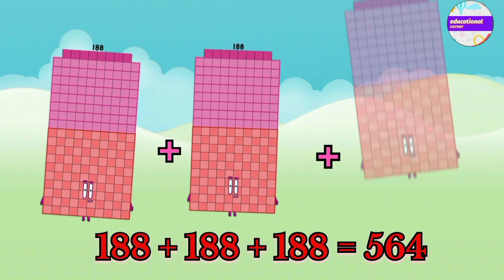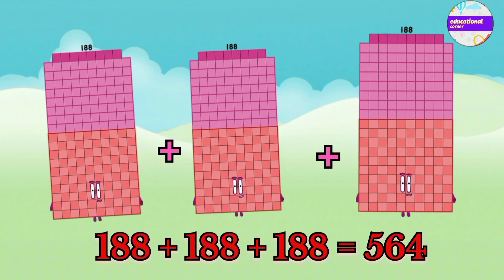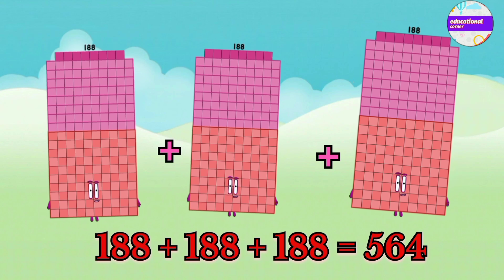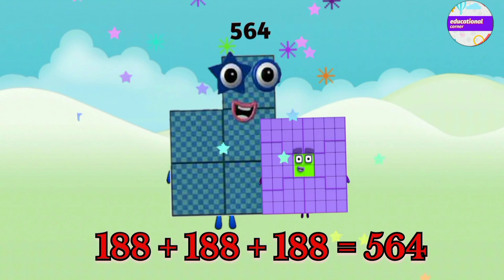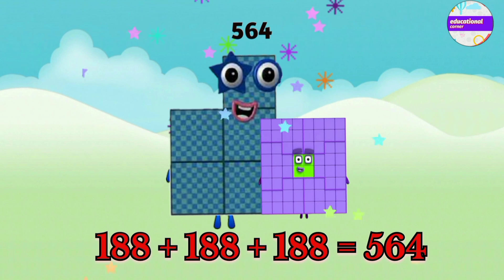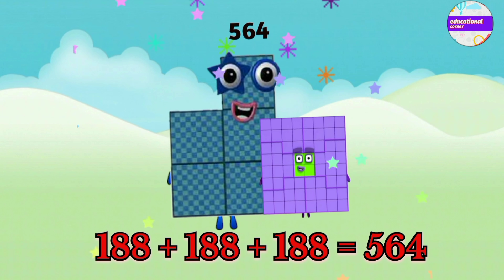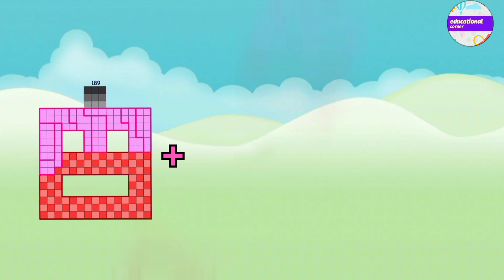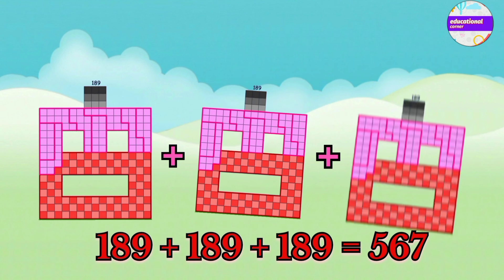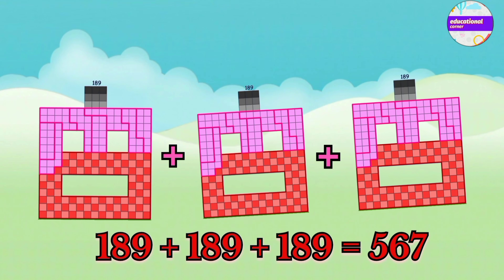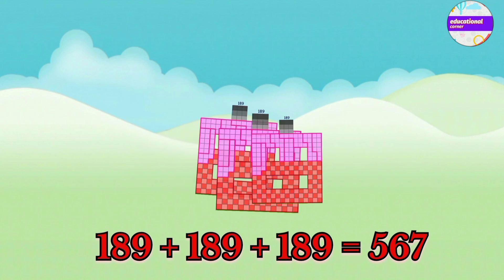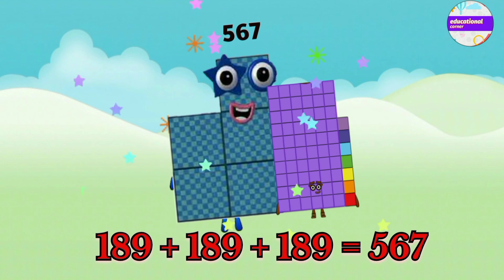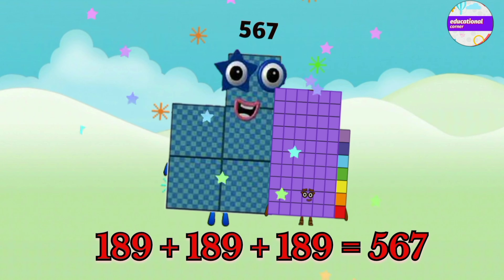188 plus 188 plus 188 equals 564. 189 plus 189 plus 189 equals 567.